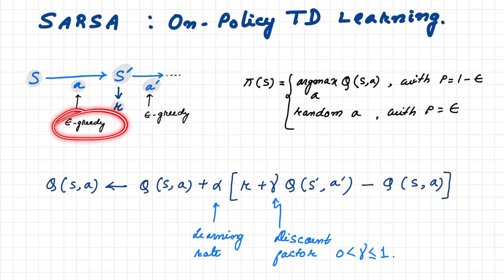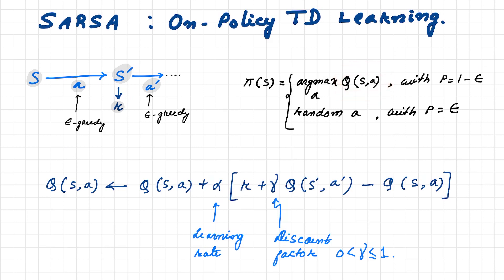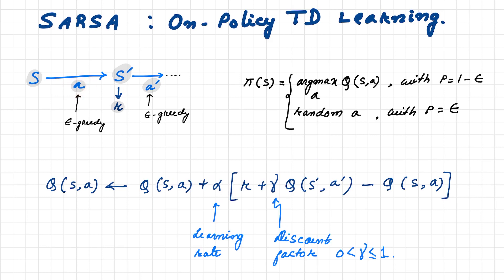The epsilon-greedy policy says: apply the action that maximizes the Q-value with probability one minus epsilon, where epsilon is a small number like 0.1 or 0.2. Otherwise, apply a random action with probability epsilon. So most of the time we apply the action that maximizes Q, but we sometimes randomly explore — giving us a probabilistic approach to balancing exploitation and exploration.